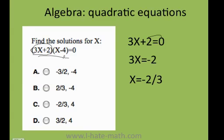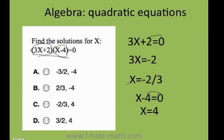Let's find the second value. I just grab this factor and make it equal to 0. x minus 4 equals 0. Leave the x by itself, and I get that x is equal to 4.